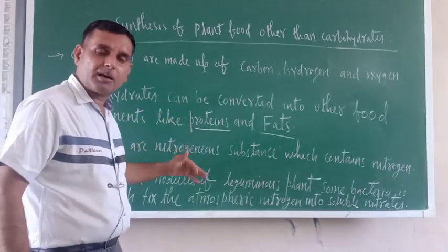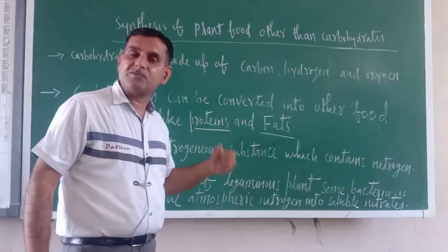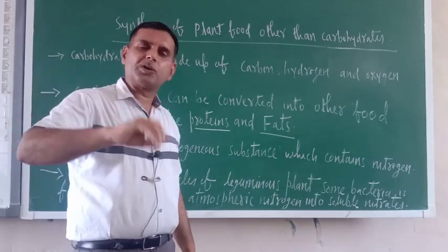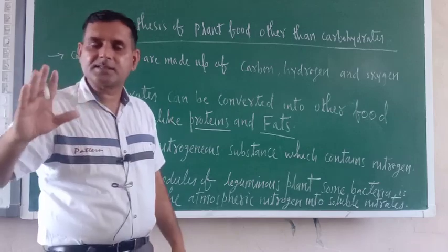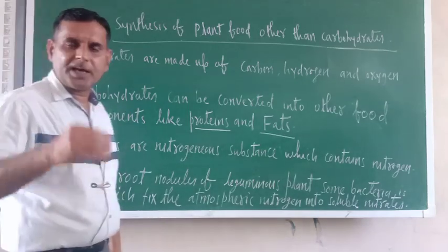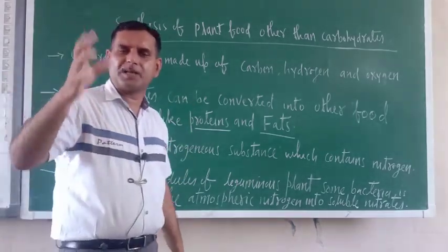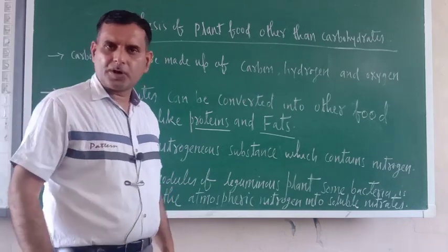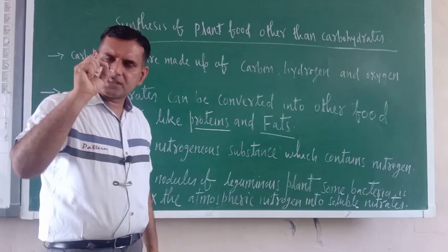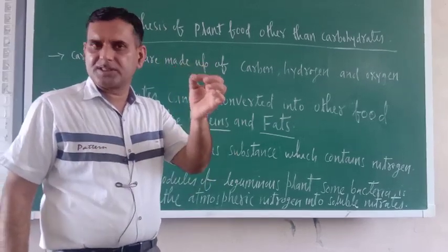What are proteins? Proteins are nothing but a nitrogenous substance which contains nitrogen. Protein is made up of carbon, hydrogen, and oxygen, but in addition they contain a trace amount of nitrogen — that is why they are called nitrogenous compounds. Now, how do plants synthesize protein? You might have heard about leguminous plants — like soya bean, peas, and gram. If you look carefully at their roots, you will find some root nodules, small outgrowths in their roots.